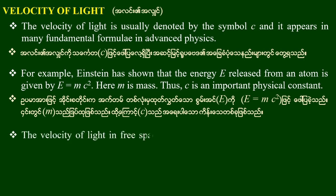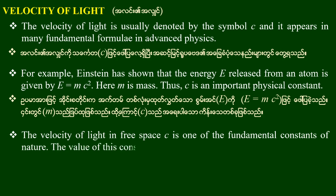The velocity of light in free space is one of the fundamental constants of nature. The value of this constant is taken as 3 times 10 to the power 8 meters per second.